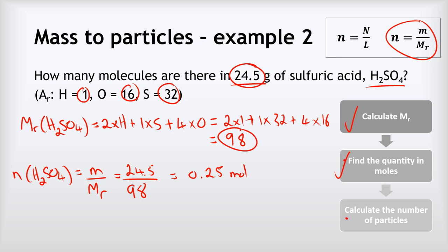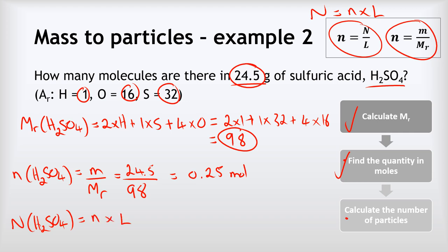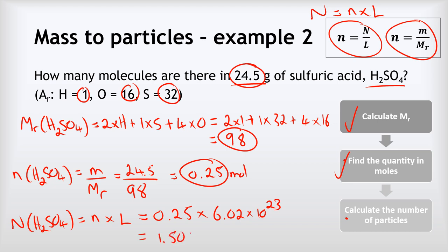The final step is to calculate the number of particles using the rearranged equation: number of particles of H₂SO₄ equals N, the number of moles, multiplied by Avogadro's constant L. That equals 0.25 multiplied by 6.02 times 10 to the power of 23, giving a final answer of 1.505 times 10 to the power of 23 molecules in 24.5 grams of sulfuric acid.